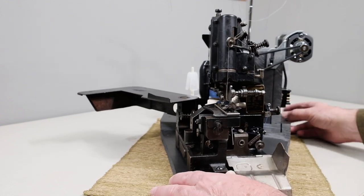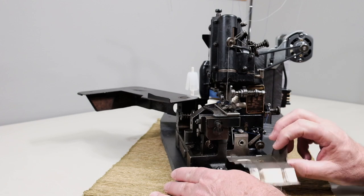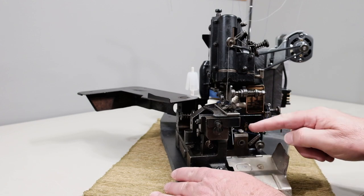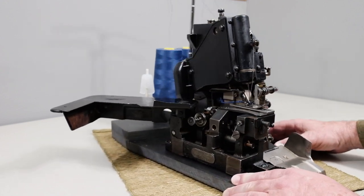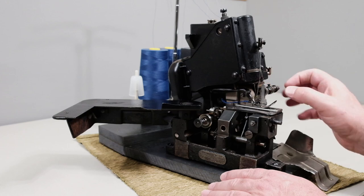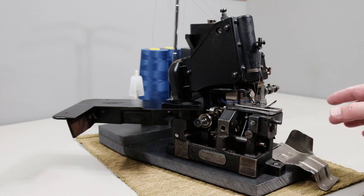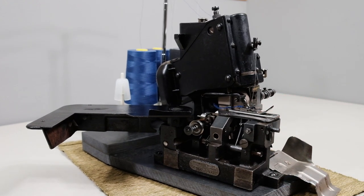But you got the badge right here that shows Union Special, the model number. This drops out of your way for threading the machine obviously. And then there's a little trick you can do here. You can actually, this is spring loaded on a shaft. And let me just check the camera. I'm going to bring it in a little closer. There we go.